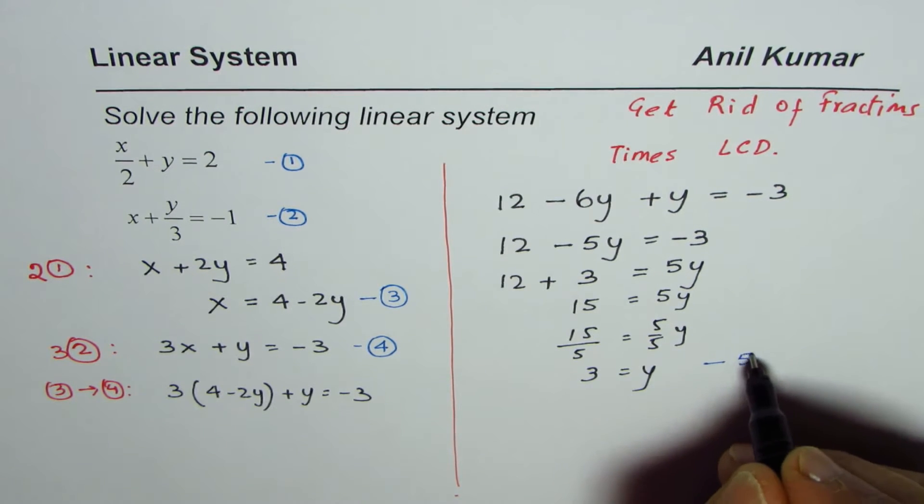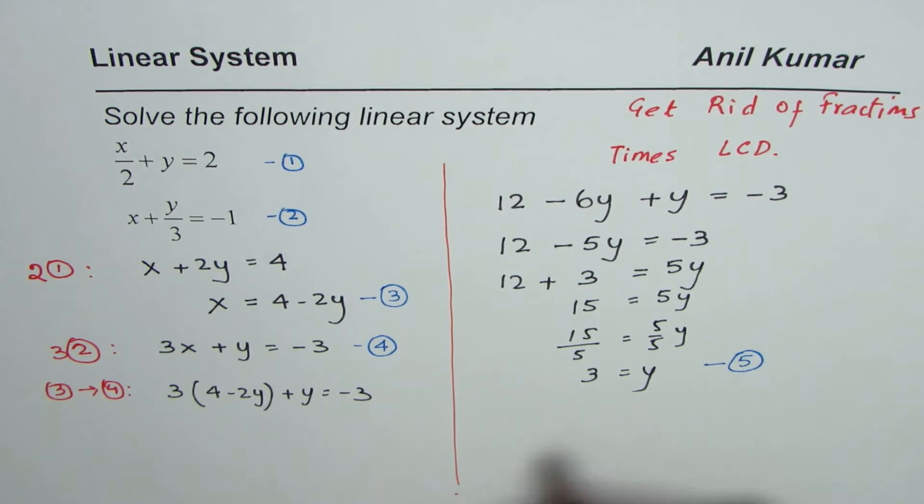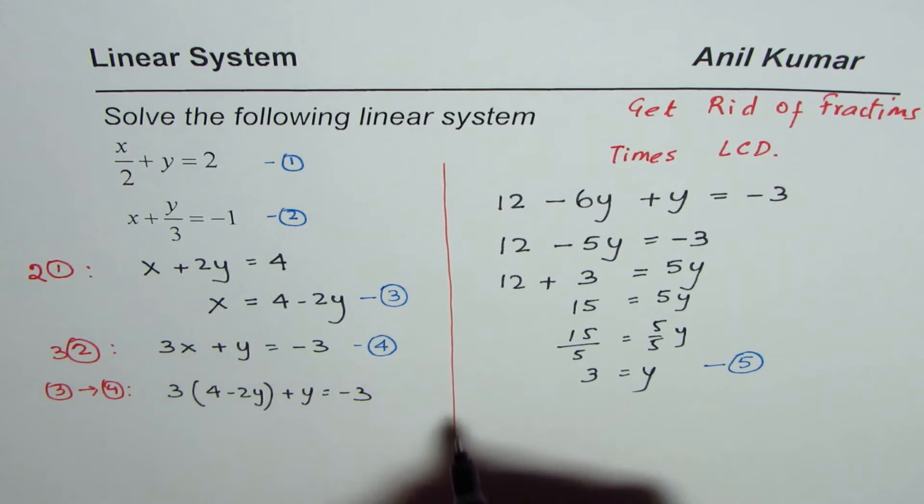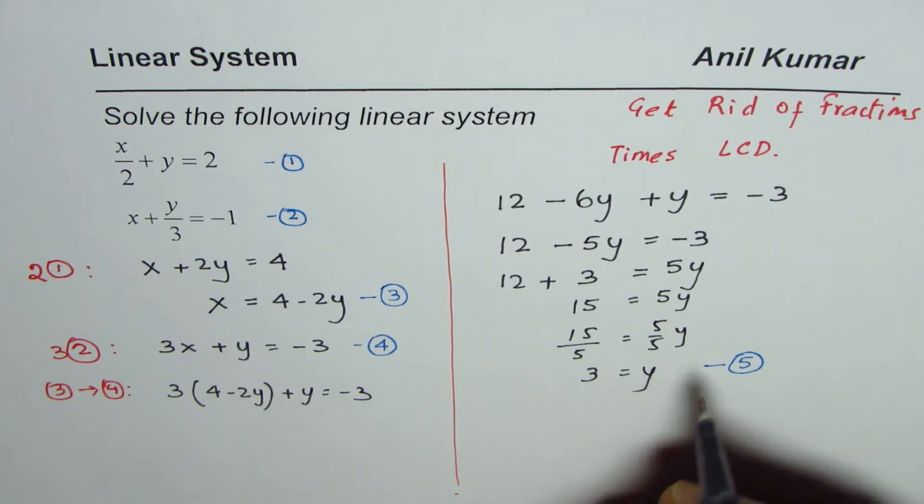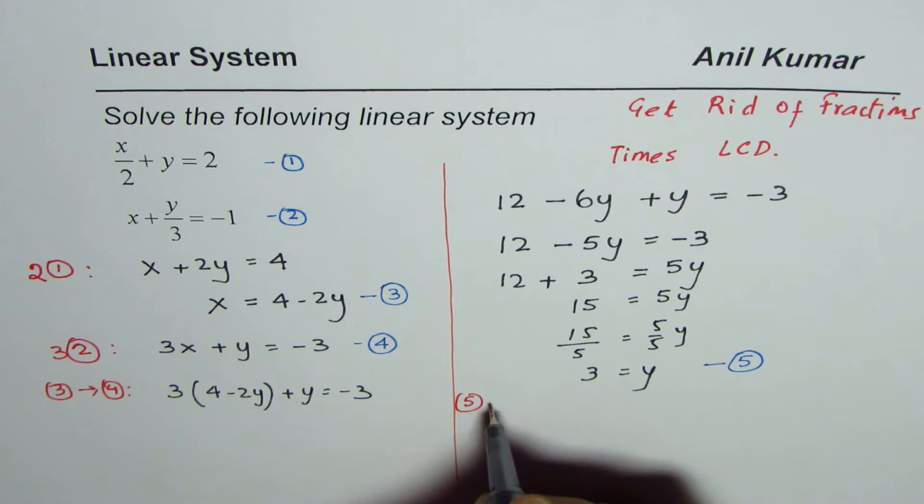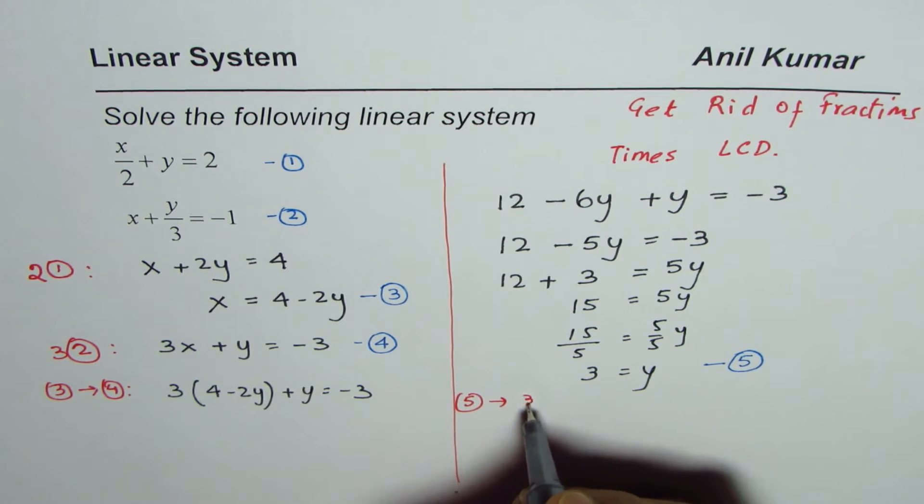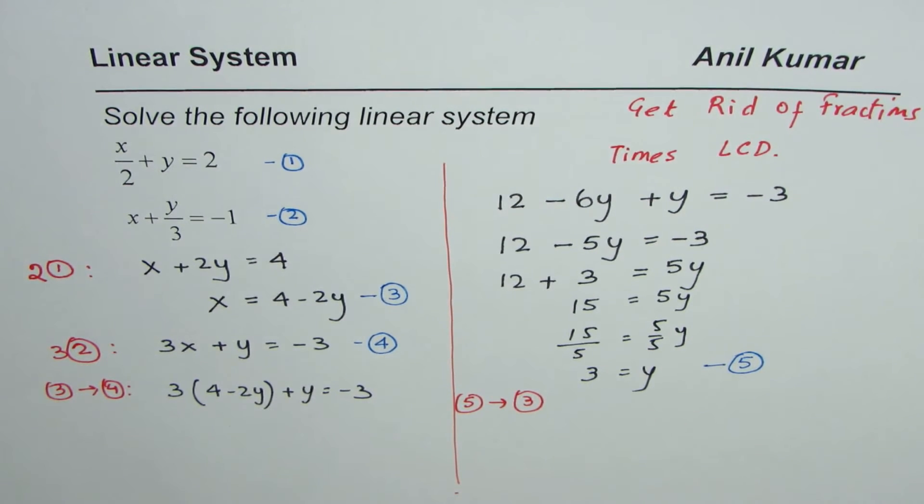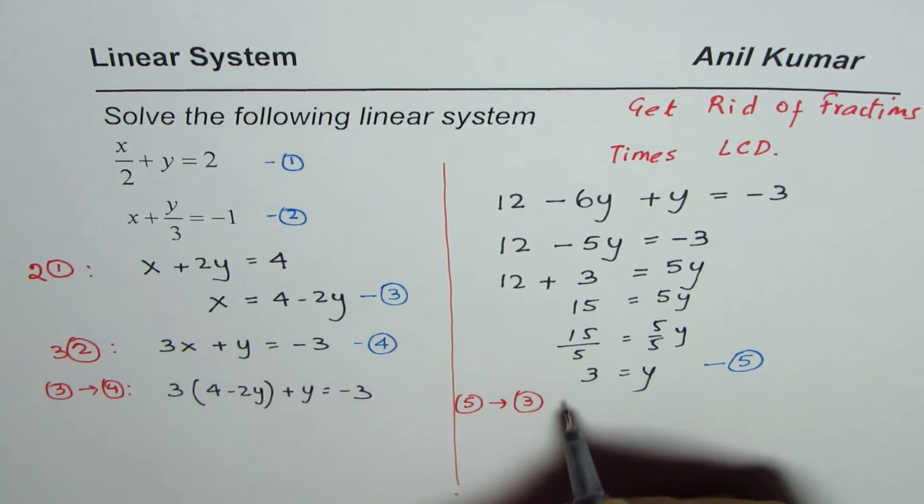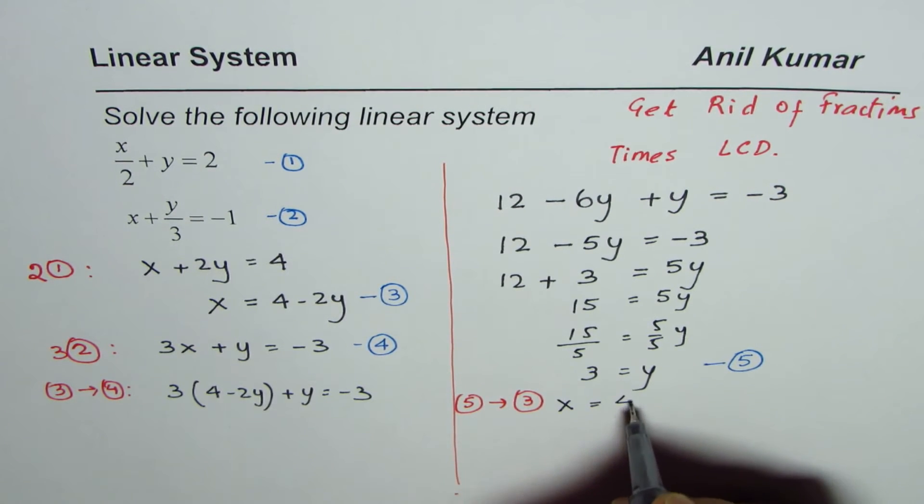To find the value of x we can substitute the y value of 3 from equation 5 into equation 3. So x is equal to 4 minus 2 times the value of y which is 3. So x equals 4 minus 6 and that is minus 2.